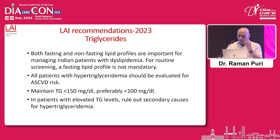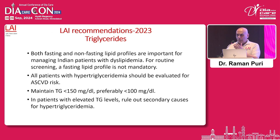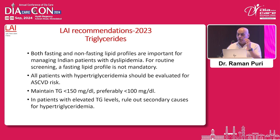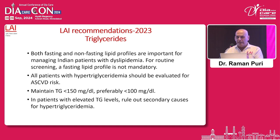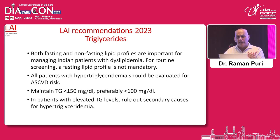This means triglyceride should be brought down to less than 150, but preferably less than 100. Remember: whenever triglyceride is raised, always rule out secondary causes of dyslipidemia — hypertriglyceridemia may have an extremely important secondary cause. Whatever you do, if there is a secondary cause, you will not be able to bring down triglyceride. And lifestyle intervention plays a very important role in reduction of triglyceride.